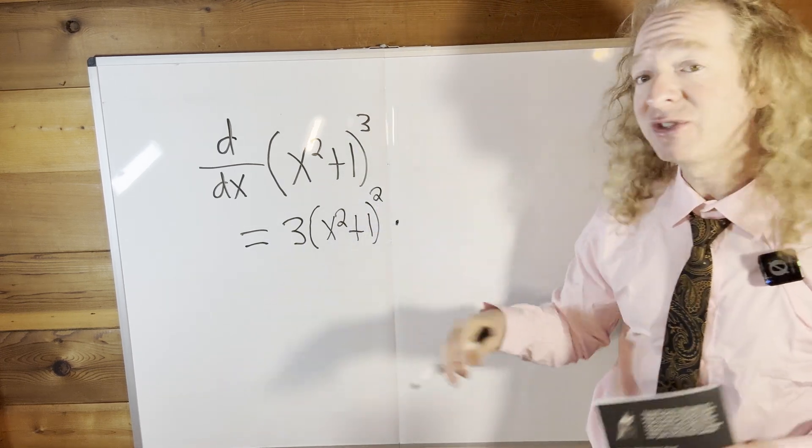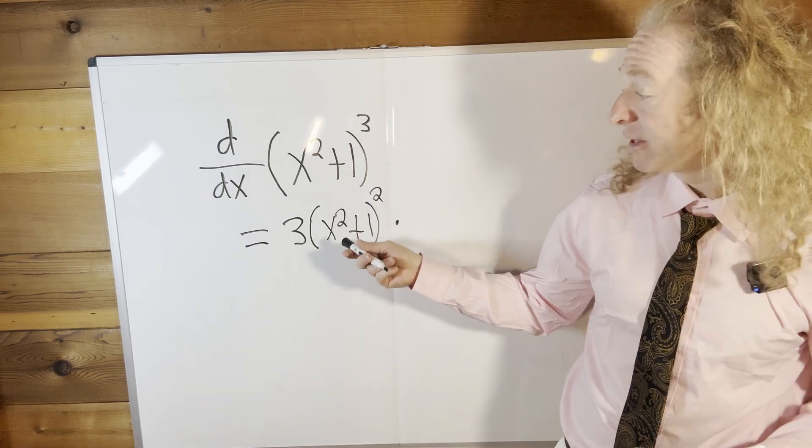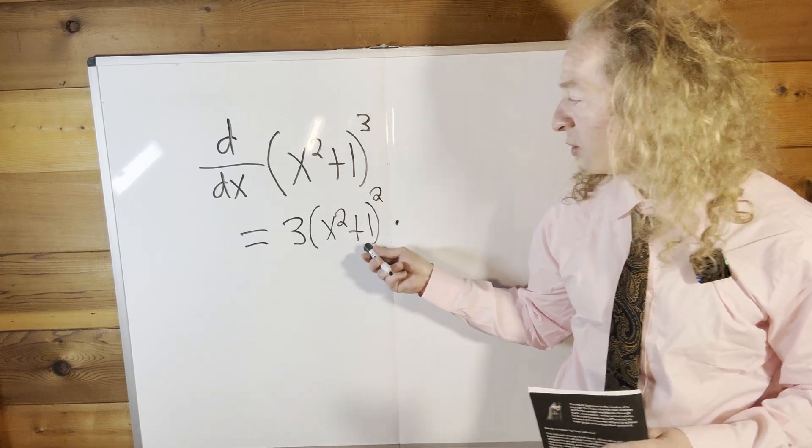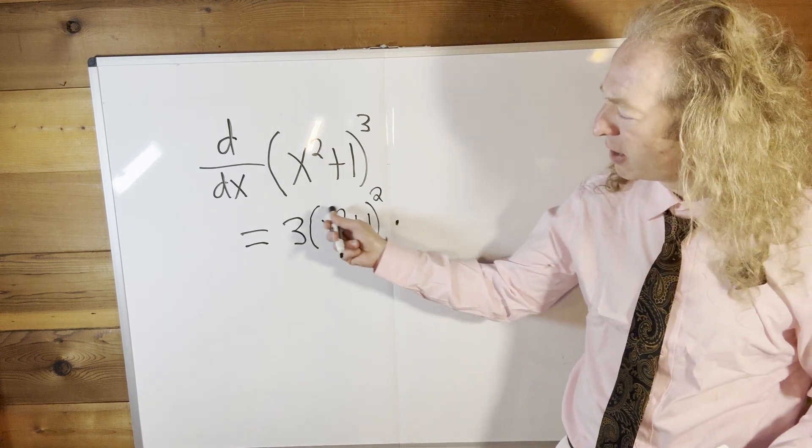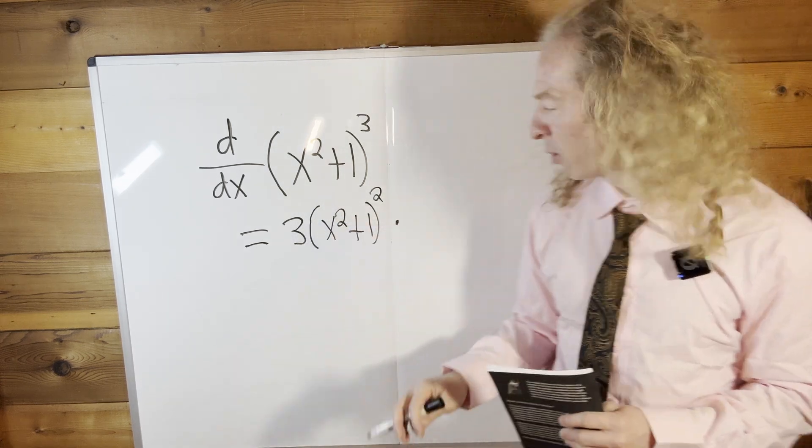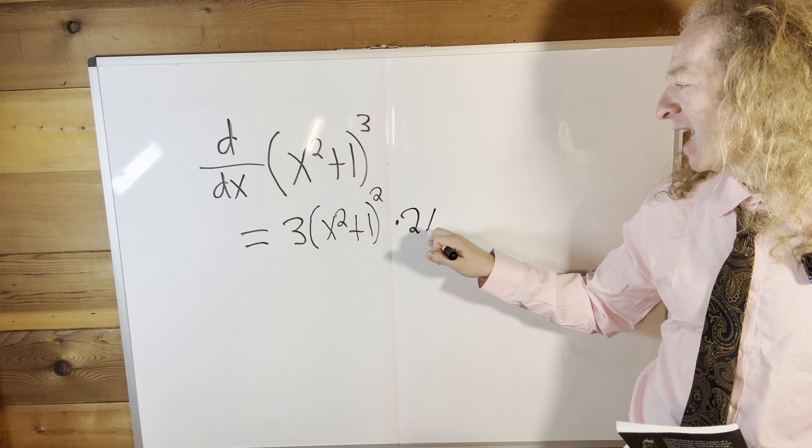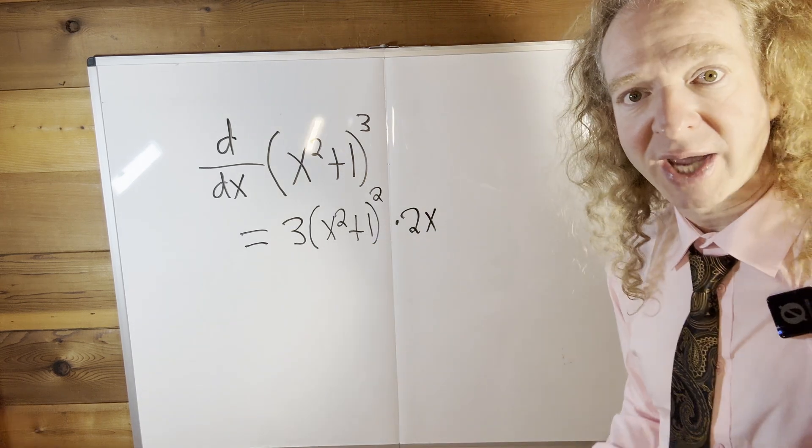And then times the derivative of the inside function. So the inside function is x squared plus 1. The derivative of x squared is 2x. That's the power rule. Bring down that 2, subtract 1 from the exponent. And then the derivative of 1 is 0, so we're not going to bother to write it.